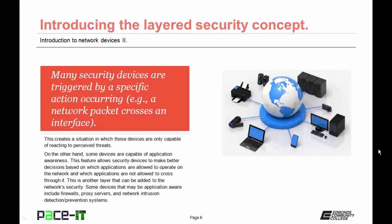Many security devices are triggered by a specific action occurring, such as a network packet crossing an interface on a router. This creates a situation in which those devices are only capable of reacting to perceived threats, which in itself can be a weakness in security. On the other hand, some devices are capable of application awareness, a feature that allows security devices to make better decisions based on which applications are allowed to operate on the network and which are not. This is another layer that can be added to the network's security.